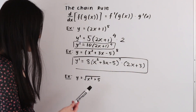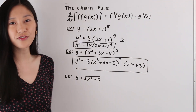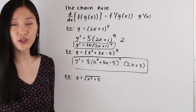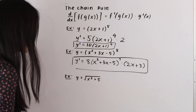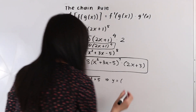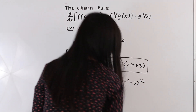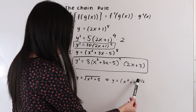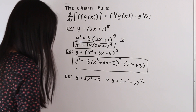In this next example, we have the function y is equal to the square root of x squared plus 5. Since this function is given in radical form, we rewrite the radical as a fractional exponent: y is equal to the quantity x squared plus 5 to the 1 half power. We can see this is a composite function — the outer function is the 1 half power and the inner function is x squared plus 5 — so we need to use the chain rule.